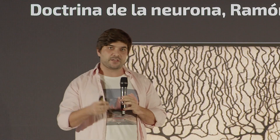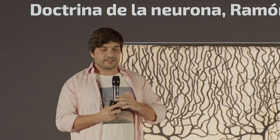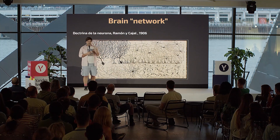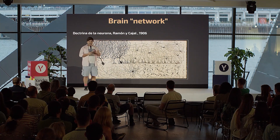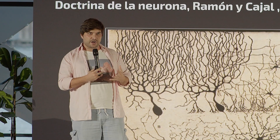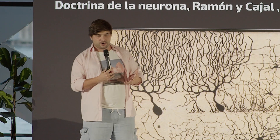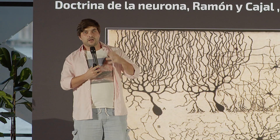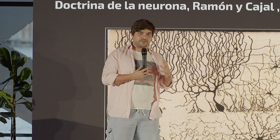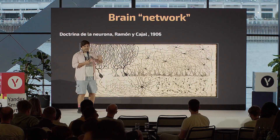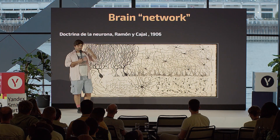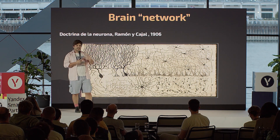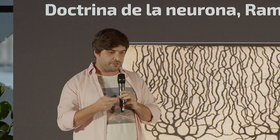Graph theory deals with networks, and networks are really important for the brain. I would say that brain sciences or neuroscience emerged as a distinct field of study as soon as we understood that the brain is a network of interconnected neurons. It was called Doctrina de la Neurona by Ramón y Cajal, who received the first Nobel Prize in physiology in 1906, when he proved that the brain consists of neurons. Before that, people thought it was some unified mass like jelly. So since the beginning, neuroscience was about networks.